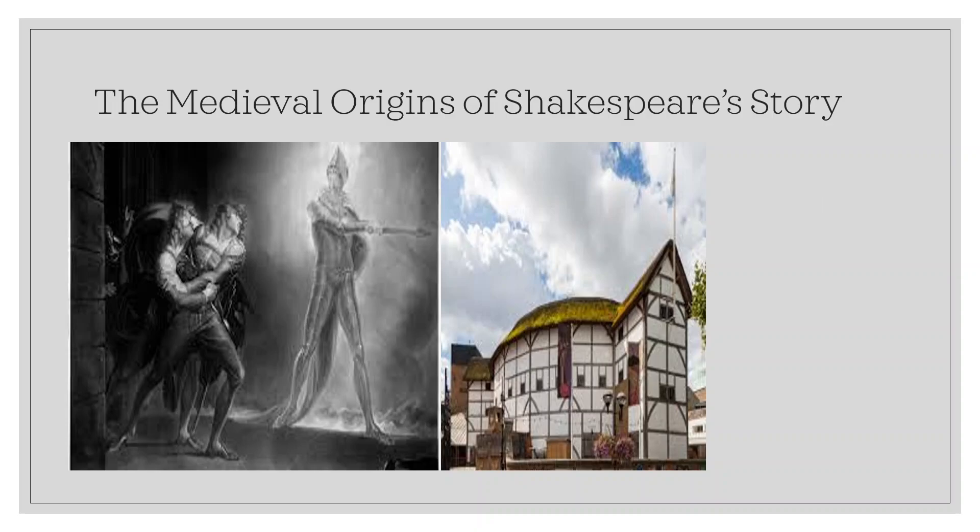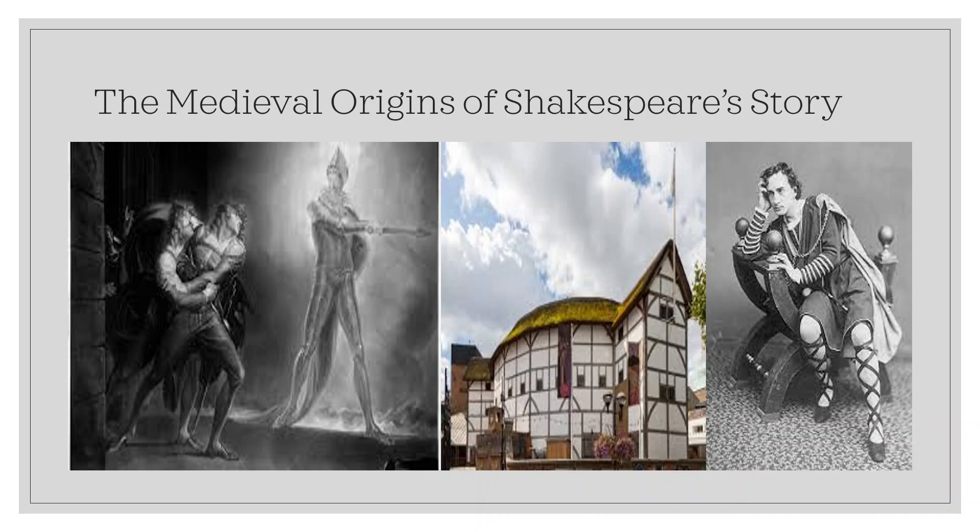It is also assumed that there must be a link between Shakespeare's son, Hamlet, who died aged 11 in 1596, and the playwright's choice to write a play called Hamlet. Yet it may in fact be nothing more than coincidence, for Hamlet and Hamnet proved relatively common names at the time. In fact, Shakespeare named his son after a neighbor and only wrote Hamlet a few years later.